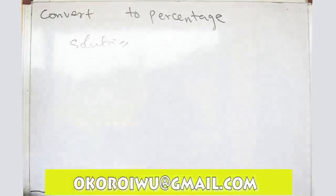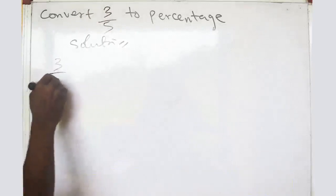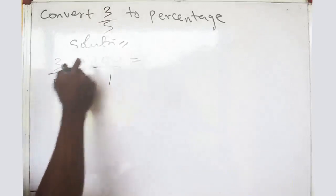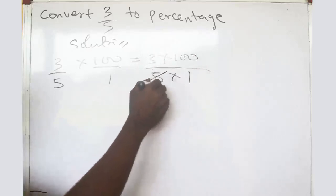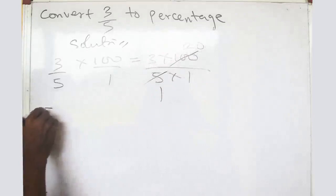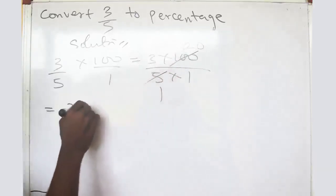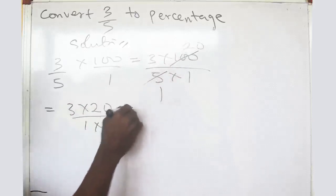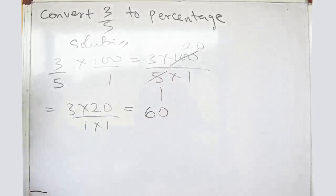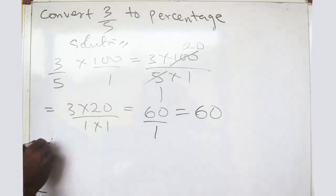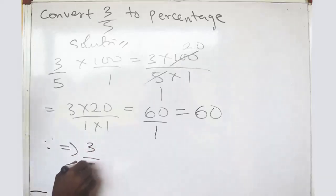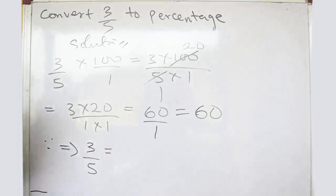Now if I give you three over five — what percentage is that? Three over five multiplied by one hundred divided by one gives you three times one hundred divided by five times one. This five cancels into one hundred to give you twenty, so we are left with three times twenty divided by one, which is sixty. Therefore three over five is nothing but sixty percent.